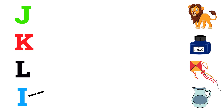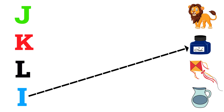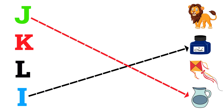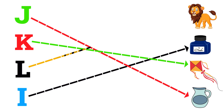I for inkpot, J for jag, K for kite, L for lion.